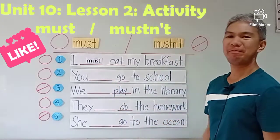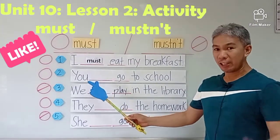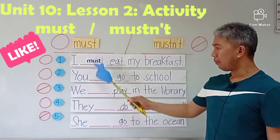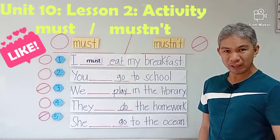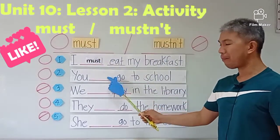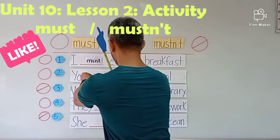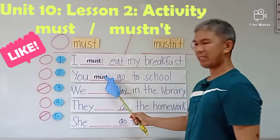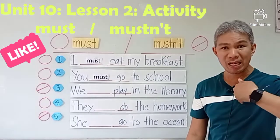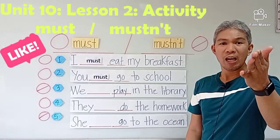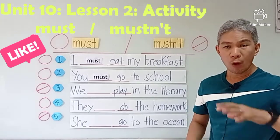Are you ready to answer? Number two — you must or mustn't go to school. What is the correct answer? The correct answer is must. Why must? Because you need to go to school. You must go to school to learn; I must go to school to work and do my job.